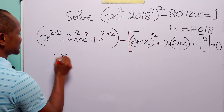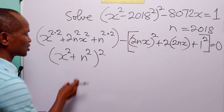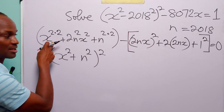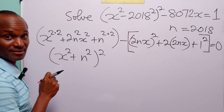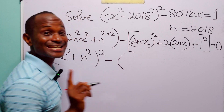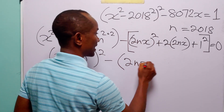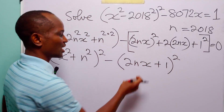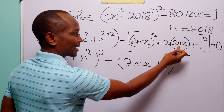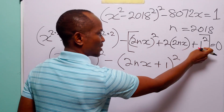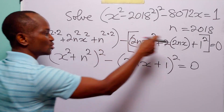You know that the first group can be written as (x² + n²)², because opening that bracket gives (x²)², plus 2·x²·n², plus (n²)² — exactly matching what we have. Then we subtract (2nx + 1)², because opening that gives (2nx)², plus 2·2nx·1, plus 1² — exactly matching the second group.